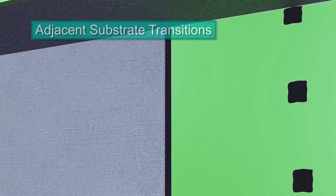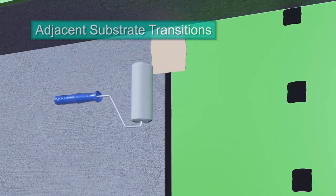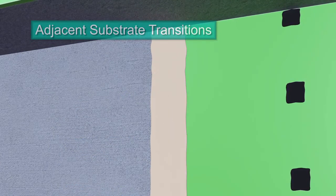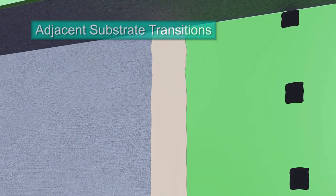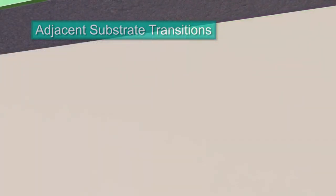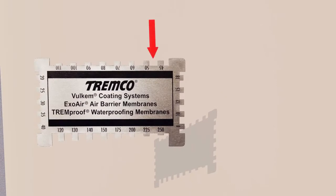Using a roller or sprayer, apply the ExoAir 230 fluid membrane to the adjacent substrate, over the sealant, and onto the face of the panel. Finish applying the ExoAir 230 fluid membrane to the remaining adjacent substrate. ExoAir 230 is applied at 48 mils to achieve 25 dry mils on exterior sheathing, and concrete substrates require 70 wet mils to achieve 35 dry.